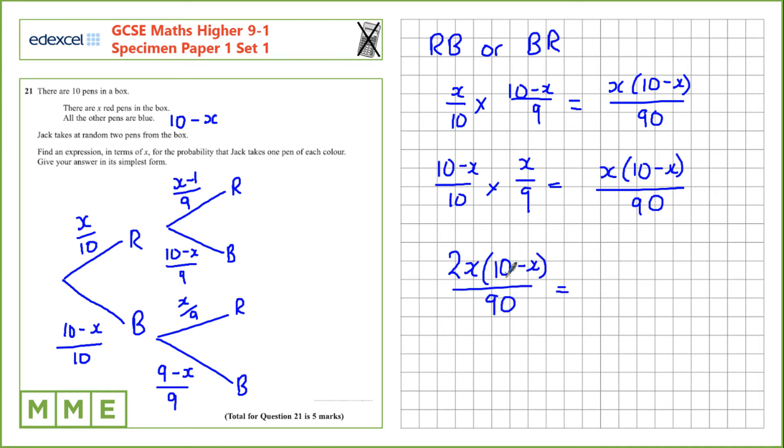Let's expand the top of the fraction. 2x times 10 is 20x, and 2x times minus x is minus 2x squared, which is all divided by 90. There's a factor of 2 that we can divide through the whole fraction. So that leaves us with 10x minus x squared over 45.